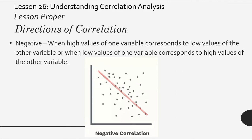How about negative? Negative direction is when high values of one variable corresponds to low values of the other variable, or when low values of one variable corresponds to high values of the other variable. So it's the opposite of earlier. If earlier they were the same, here if the first is high, the second is low, and vice versa. That's called negative correlation or negative direction of correlation.